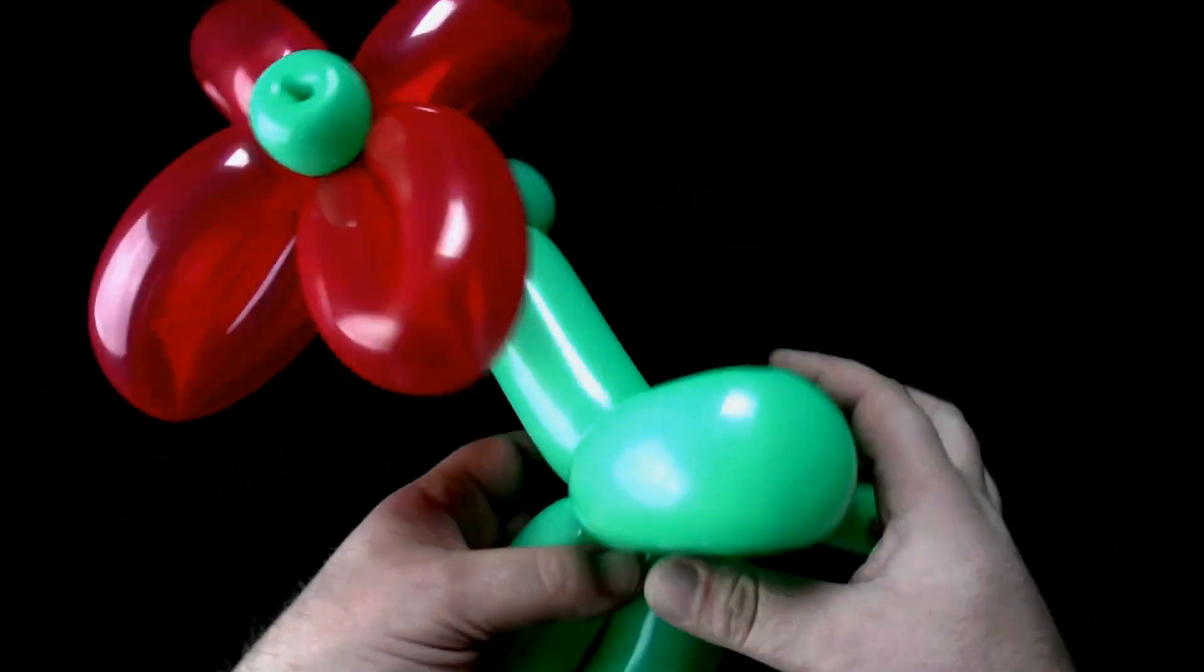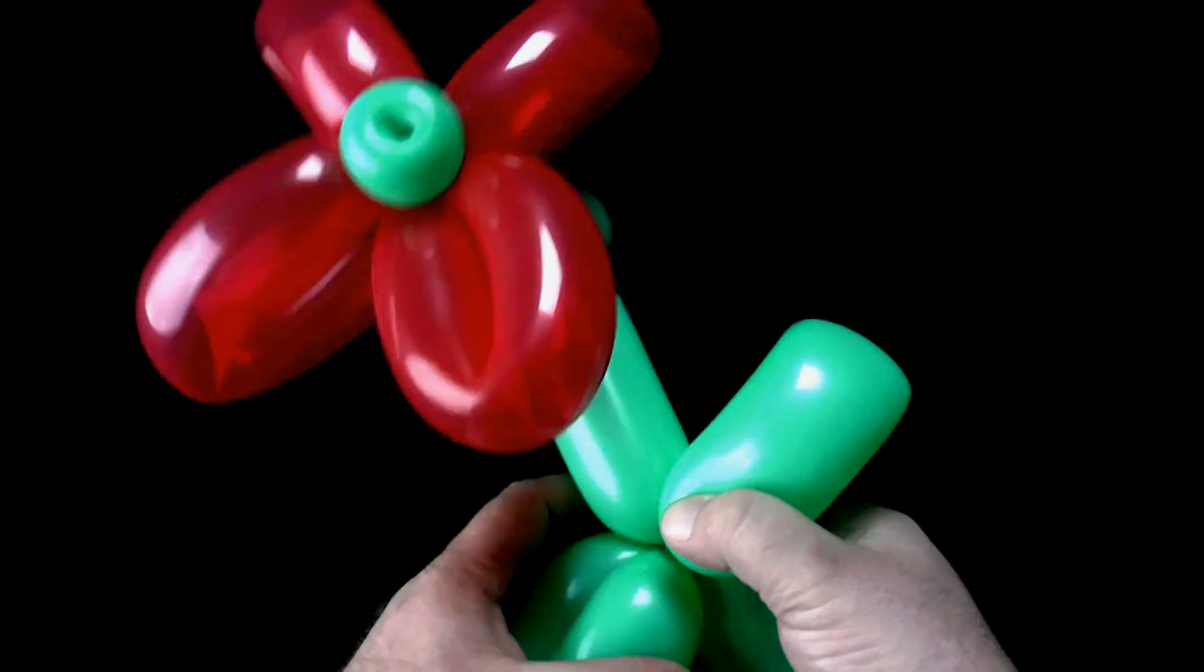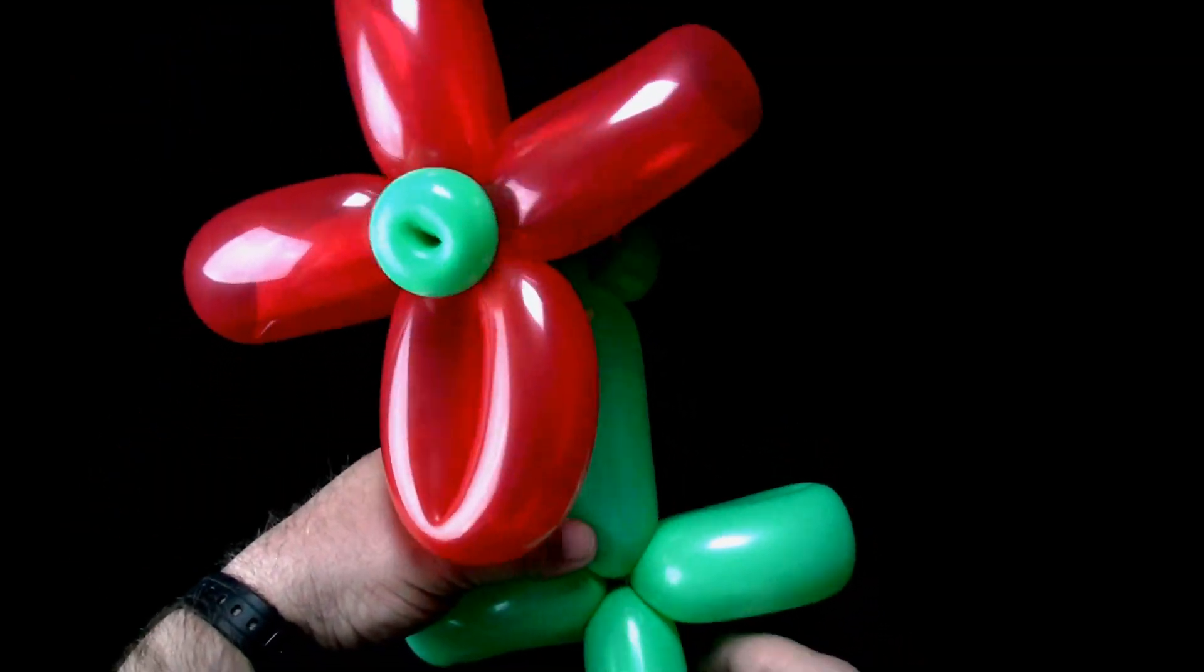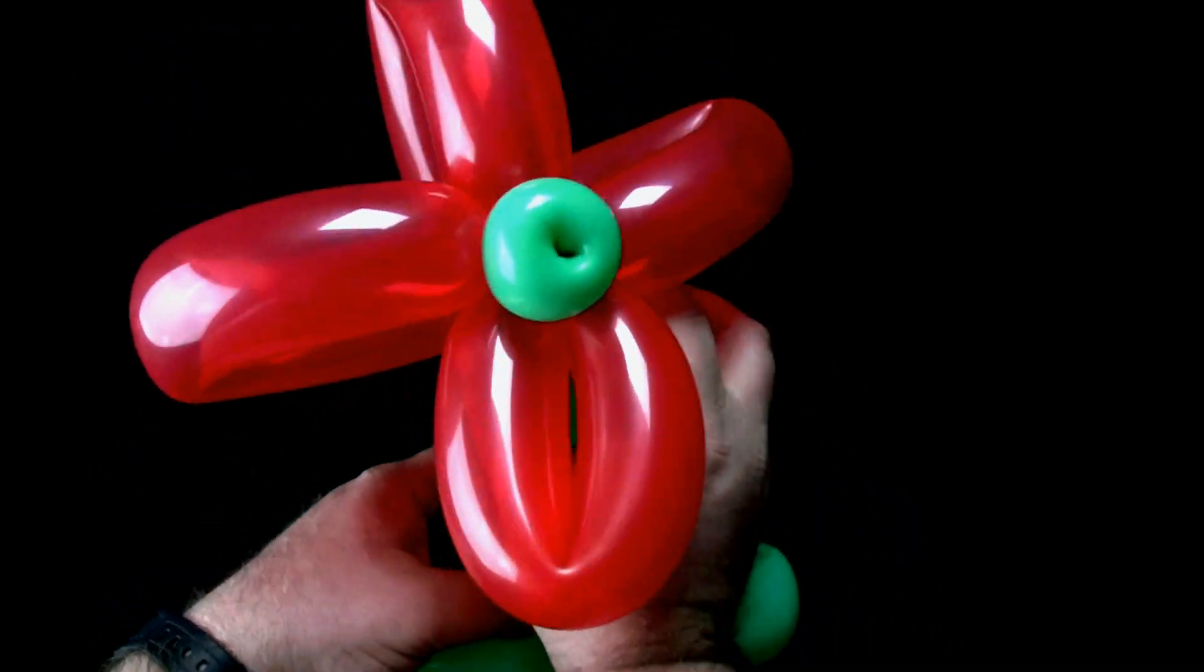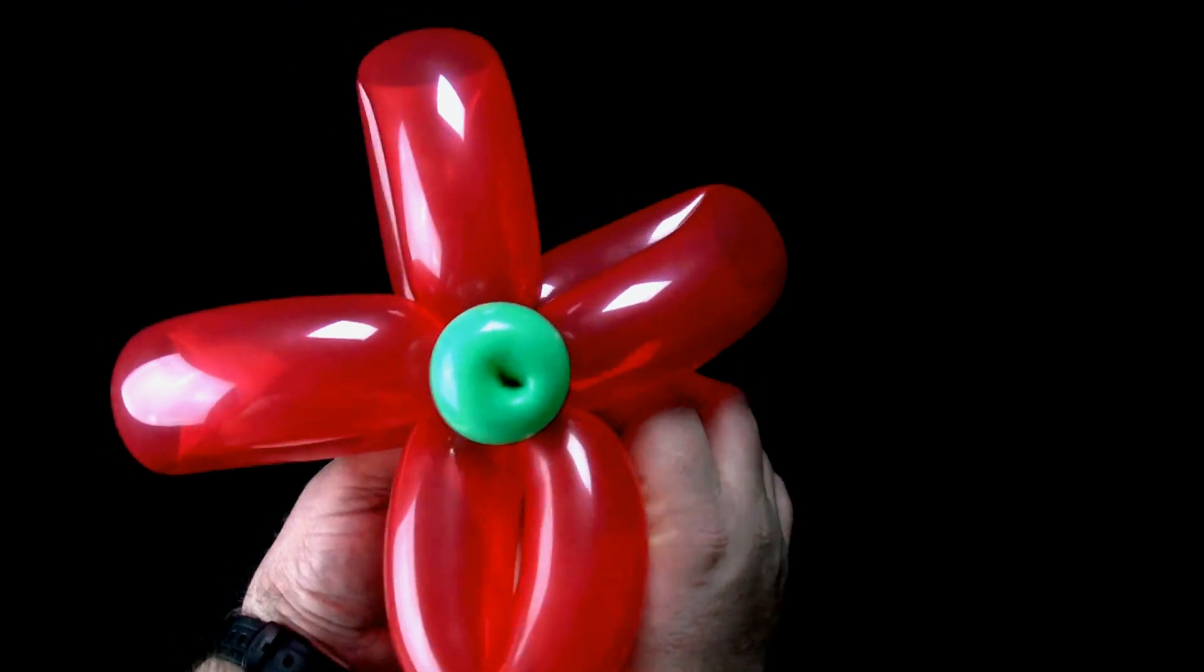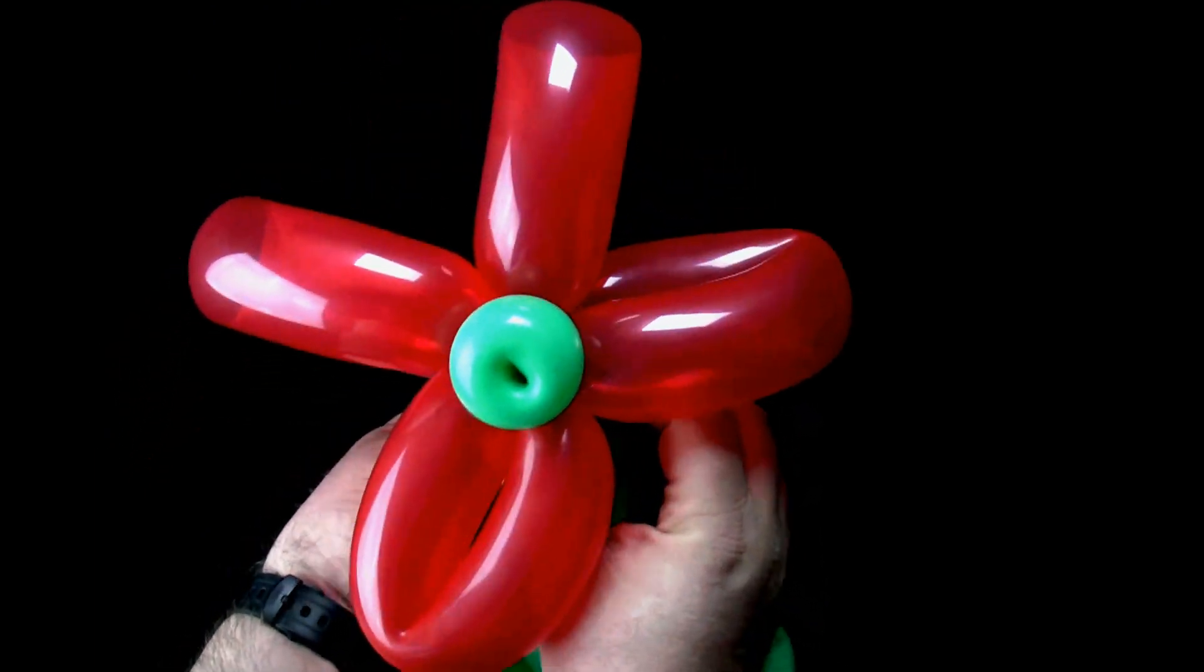Arrange the two loop twists so they stick out to the sides while the rest of the balloon forms a straight line. Adjust the petals to your liking.